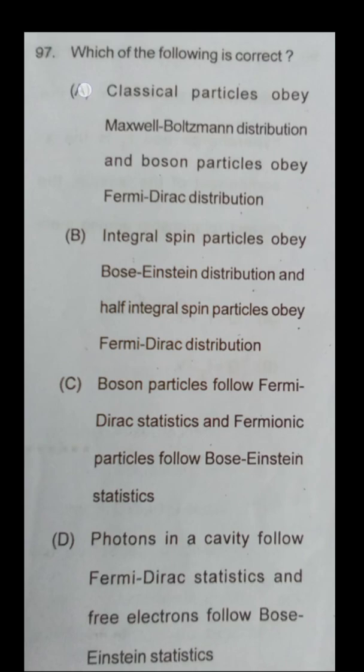Option A: Classical particles obey Maxwell-Boltzmann distribution and Boson particles obey Fermi-Dirac distribution. Option B: Integral spin particles obey Bose-Einstein distribution and half-integral spin particles obey Fermi-Dirac distribution.